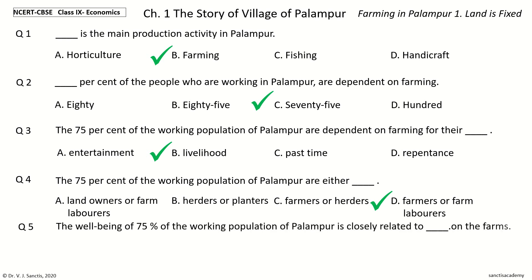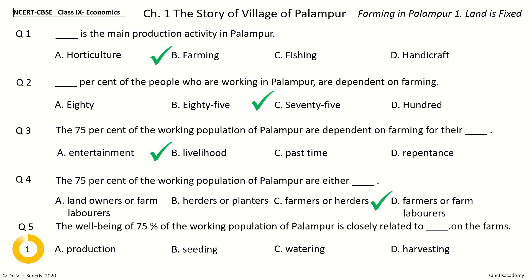Question 5: The well-being of 75 percent of the working population of Palampur is closely related to Dash on the farms. The options are Production, Seeding, Watering, Harvesting. Your time to choose. And the answer is Production. So, the well-being of 75 percent of the working population of Palampur is closely related to Production on the farms.